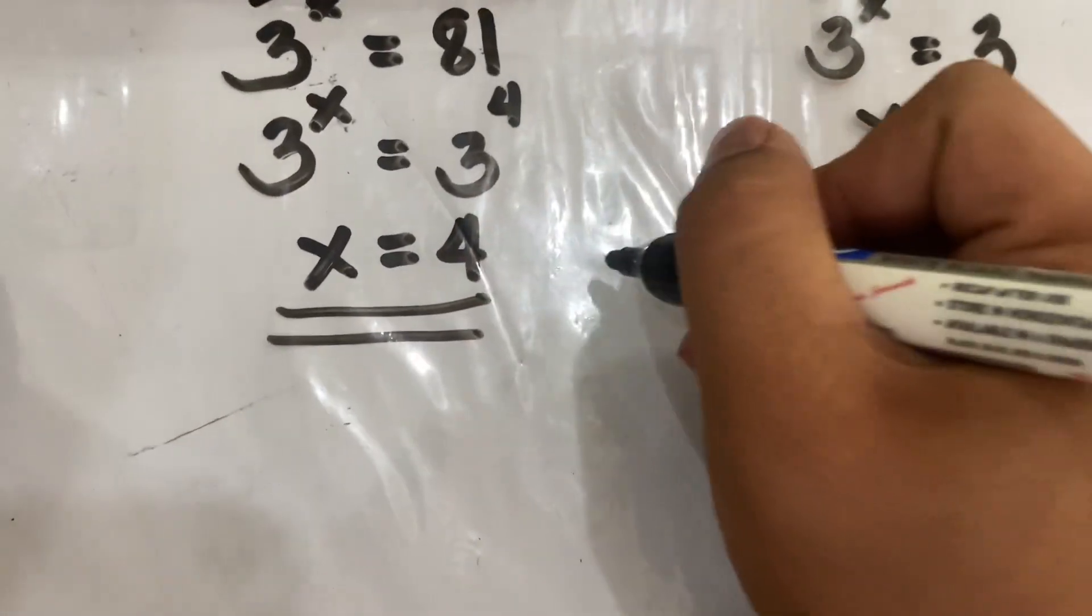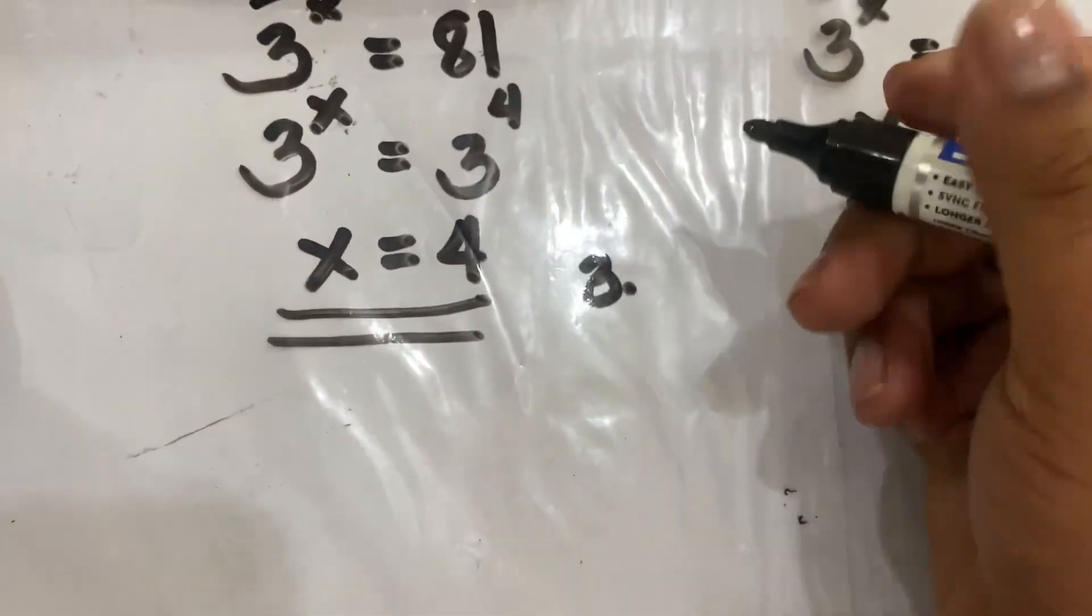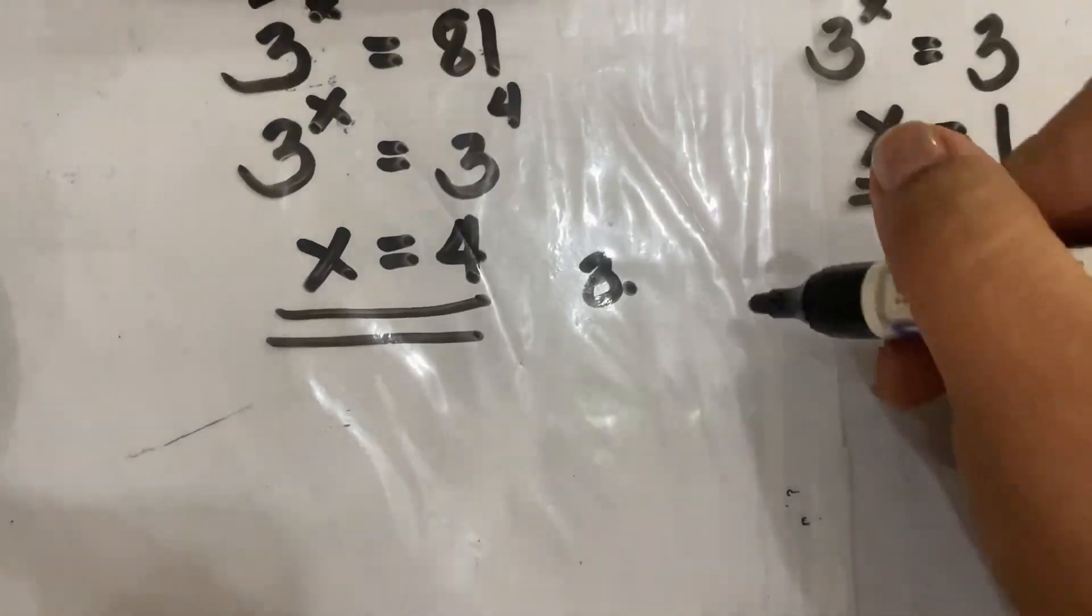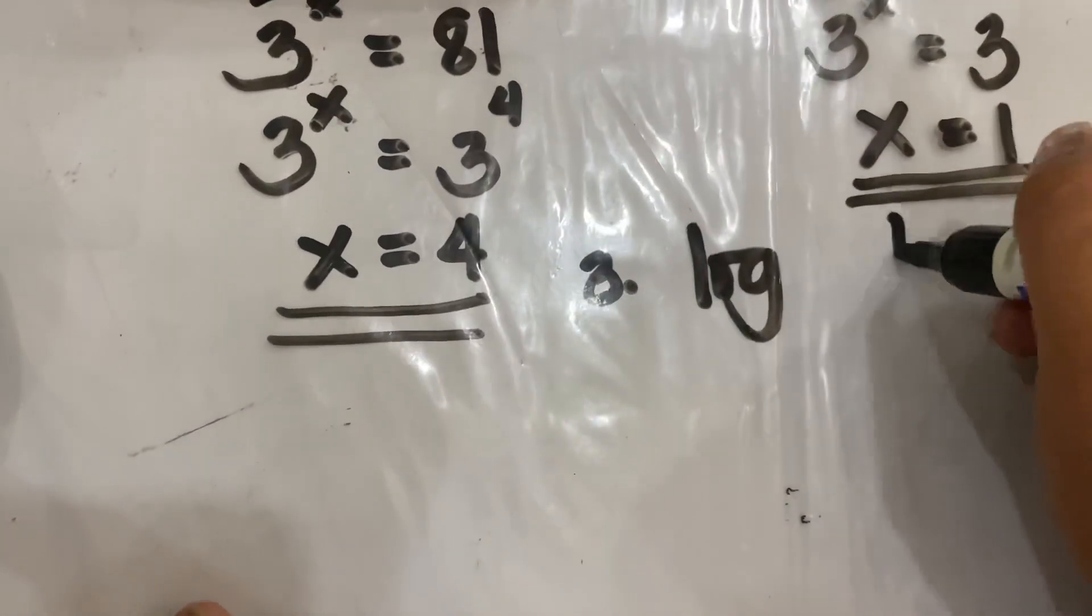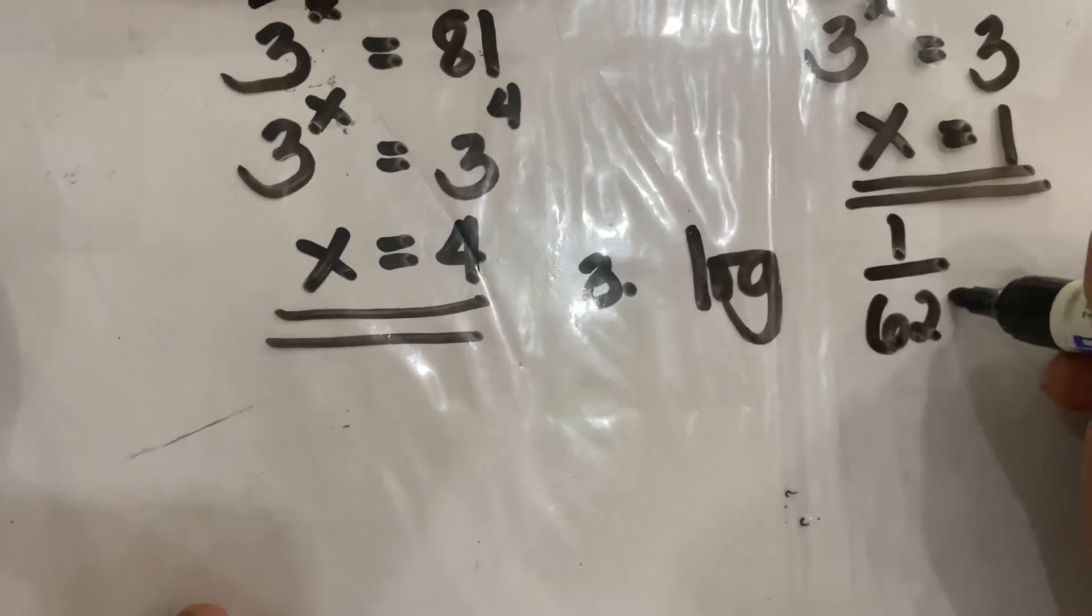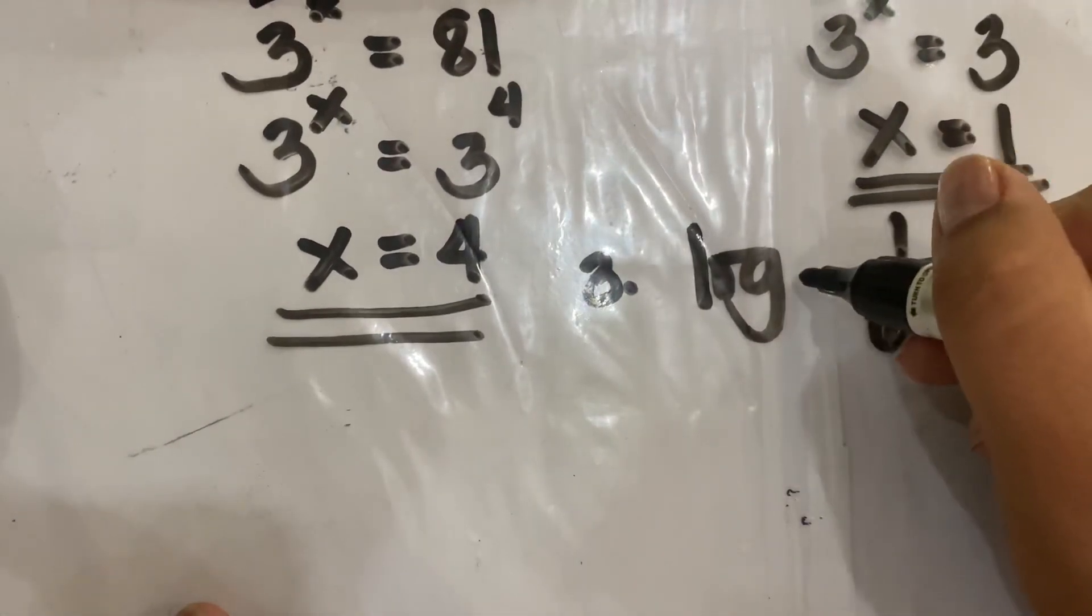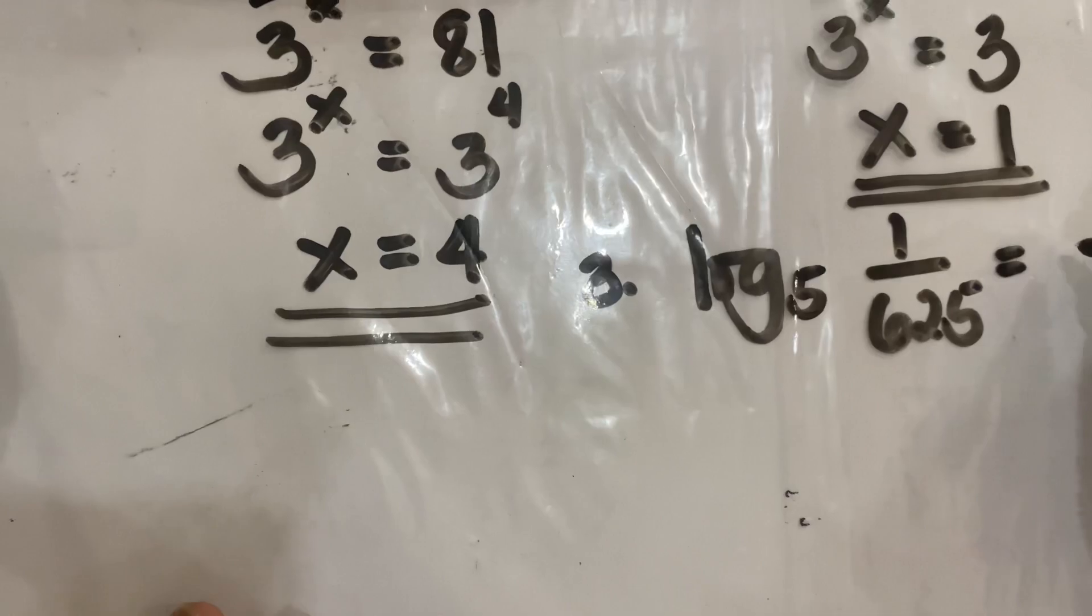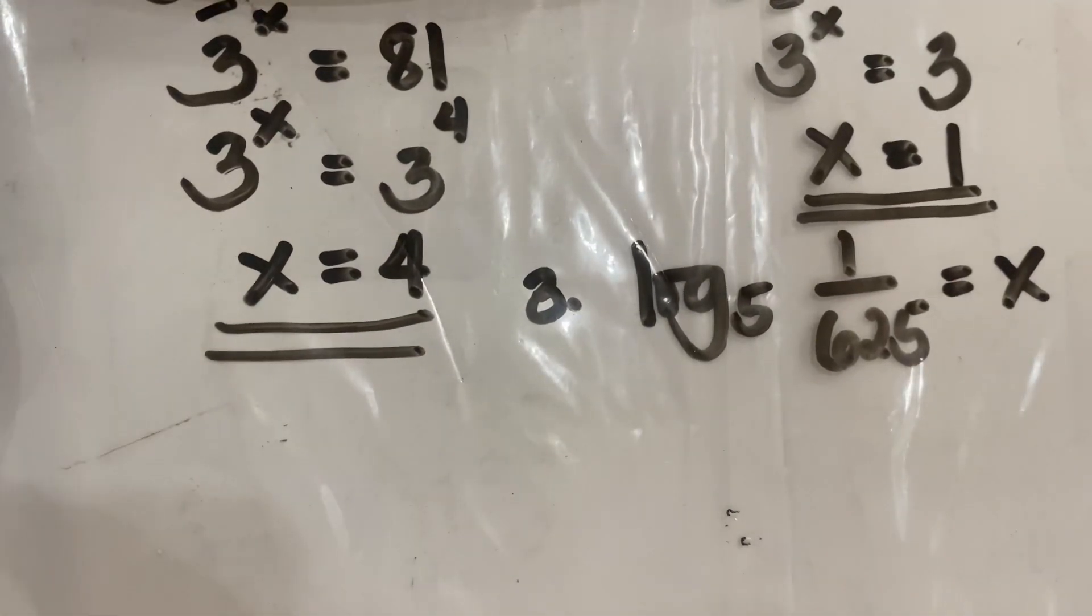Alright, for you to try this, I want you to answer number 3, the logarithm of 1 over 625 to the base 5 is equal to x.